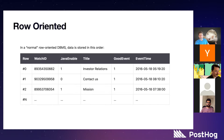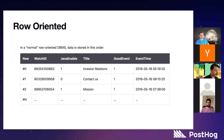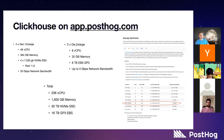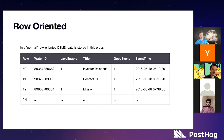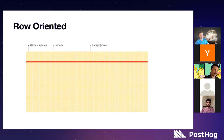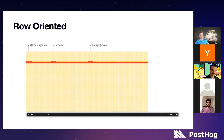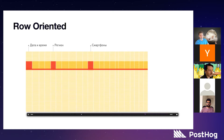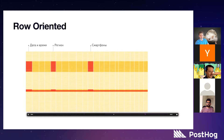So what is a row-oriented database? We talked about this a little bit in Database 101, but basically this is how data is stored on disk. For every row, it looks like a CSV where you have everything combined together. If you want to read any section of the database, you have to read every column for every row that you're scanning over.